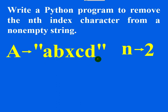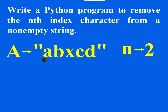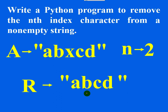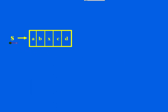The method is: extract the first substring, then extract the second substring, and concatenate the two to get the answer. To remove the nth index character, extract the first part using string slicing, extract the second part again using string slicing, then concatenate them. Your answer should be 'abcd' because the nth index character is removed from the string.